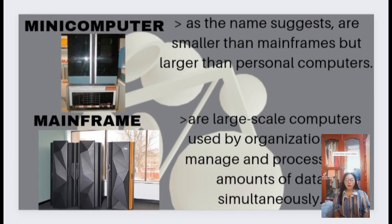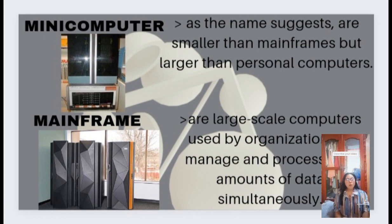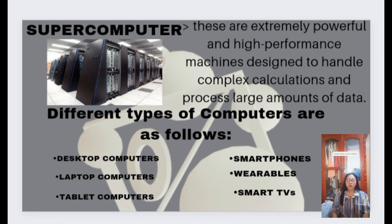Third, we have minicomputers — smaller than mainframes but larger than personal computers. They have moderate computing power and were commonly used in the past for scientific research, engineering, and business applications. Mainframe computers are large-scale computers used by organizations to manage and process vast amounts of data simultaneously, known for their reliability, scalability, and ability to handle multiple users and tasks concurrently. Fourth, we have supercomputers — extremely powerful, high-performance machines designed to handle complex calculations and process large amounts of data, typically used for scientific research, weather forecasting, and simultaneous simulations.